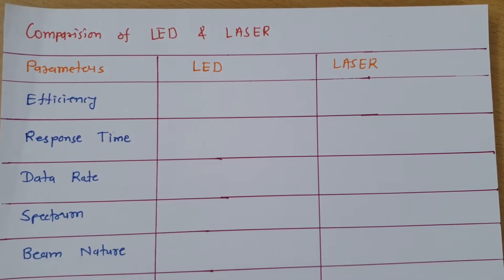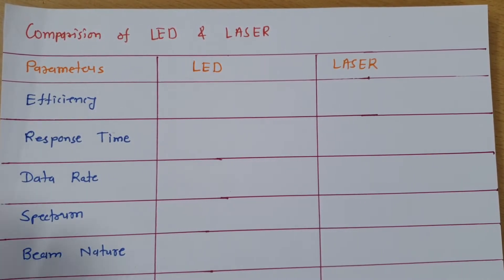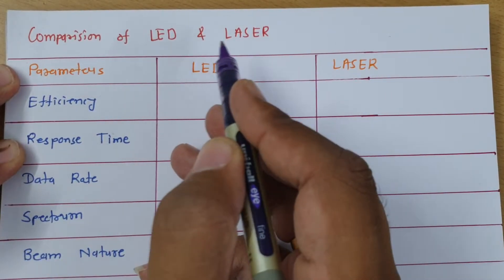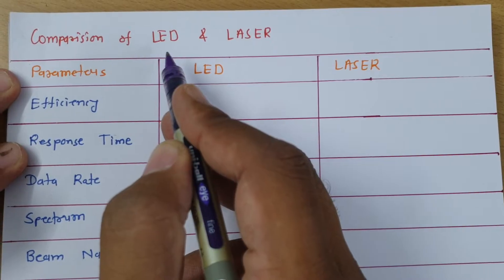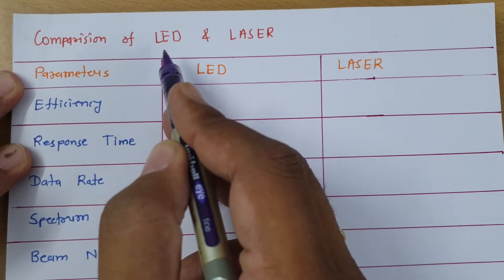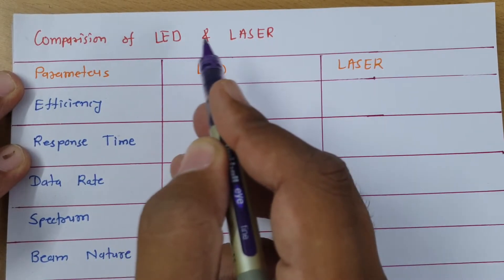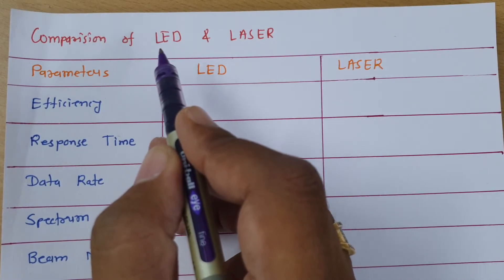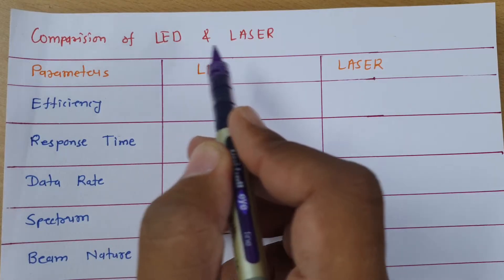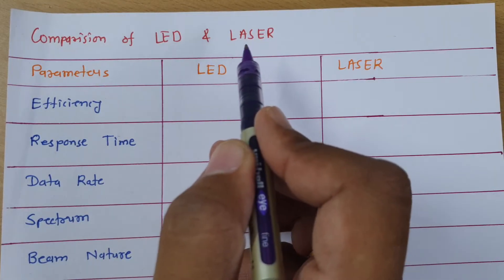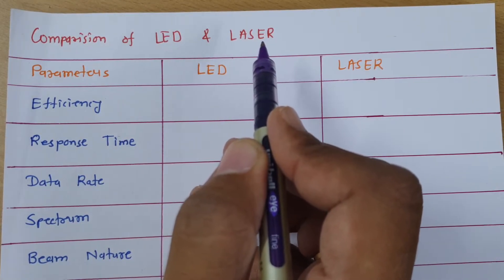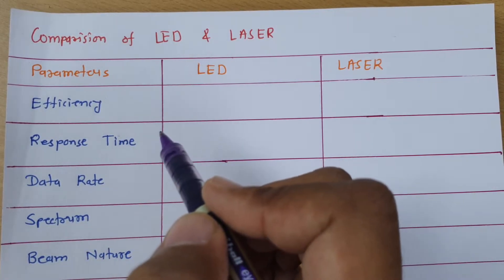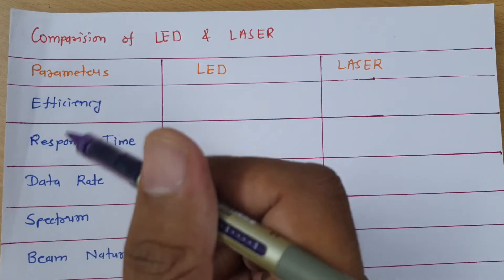Welcome to the optical communication playlist. In this session I'll explain the comparison of LED and laser — both of these devices are used in the transmitting circuit of optical communication. We will be comparing LED (Light Emitting Diode) and laser (Light Amplification by Stimulated Emission of Radiation) based on several parameters.